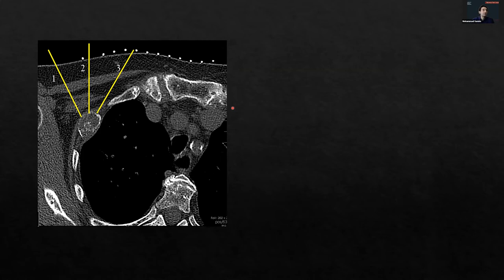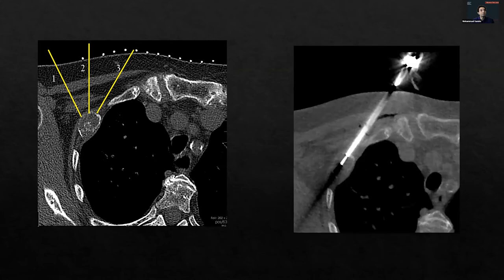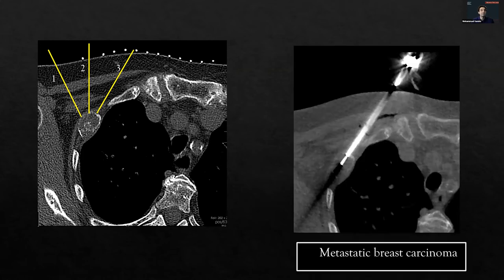For approaches one and two, you also want to look at other structures you are traversing through. As you probably noticed, there is a subclavian neurovascular bundle running there — you definitely want to avoid it. We used the parallel approach and pathology came back as metastatic breast carcinoma.